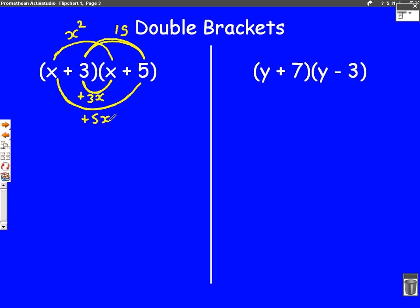Then what we do is we write all of those numbers down. So x squared always goes first. And then we use the bottom numbers, plus 3x, plus 5x. And at the end, we have the number on its own, which in this time is plus 15.